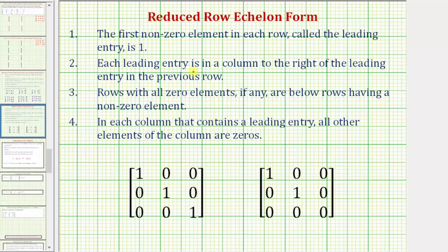Each leading entry, or one, is in a column to the right of the leading entry in the previous row. Three, rows with all zero elements, if any, are below rows having a non-zero element. And finally four, in each column that contains a leading entry or one, all other elements of the column are zeros.